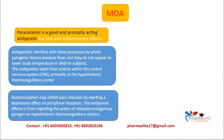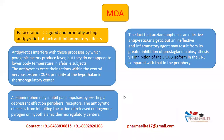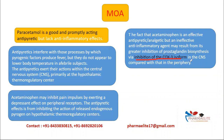The antipyretic effect is due to inhibition of the action of released endogenous pyrogens on the hypothalamic regulatory centers. Acetaminophen also inhibits pain impulses by exerting a depressant effect on peripheral pain receptors. The fact that acetaminophen is an effective analgesic and antipyretic but a poor anti-inflammatory agent is because it shows greater inhibition of prostaglandin biosynthesis via inhibition of the COX-3 isoform. COX-3 is present in the brain, and inhibition of COX-3 in the CNS is the main mechanism of action of paracetamol.